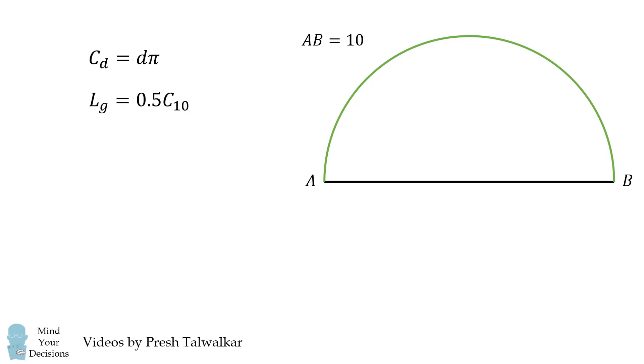The green curve will be half of the circumference of a circle with the diameter of 10. This means the length of the green curve is half of 10π, which is equal to 5π.